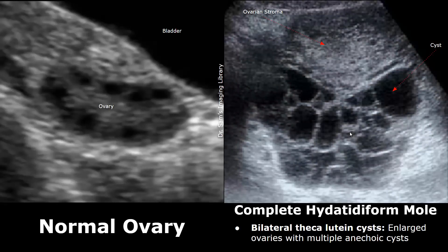This is another image showing theca lutein cysts. The ovary is enlarged and has multiple anechoic cysts, and this area is the ovarian stroma. Thank you so much for watching — please subscribe and stay tuned for more imaging videos.